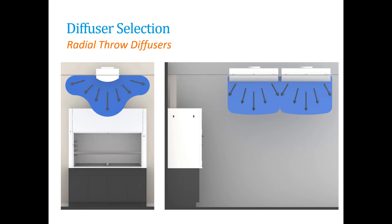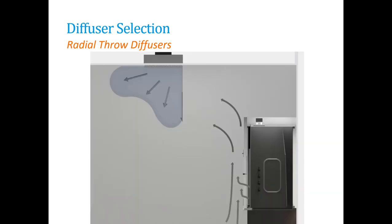Radial throw diffusers should always be located such that the throw pattern is parallel to the face of the fume hood. Radial diffusers are also unique in that the airflow travels in the direction of throw with little or no spread parallel to the flow path. This allows them to be placed relatively close to one another and to fume hoods, though they should always be placed at least two to three feet away from the face of the hood. While radial throw diffusers are available in both one- and two-way throw patterns, discharge airflow should always be parallel to the face of the hood. A one-way throw diffuser directed away from the hood face can lead to velocities exceeding 40 to 50 feet per minute across the hood opening due to induced air motion on the back side of the throw pattern.